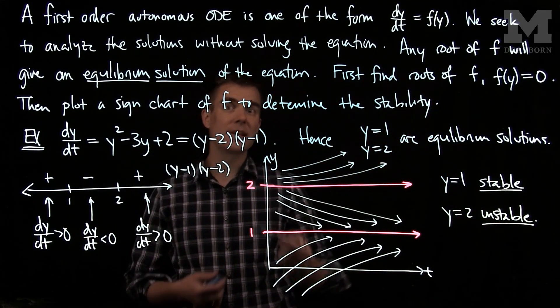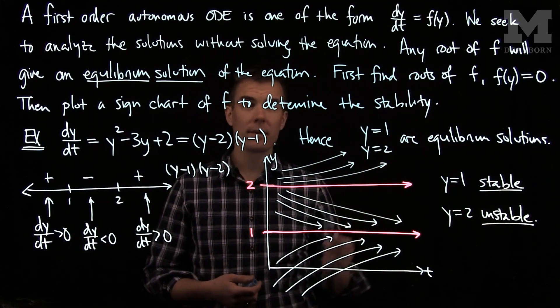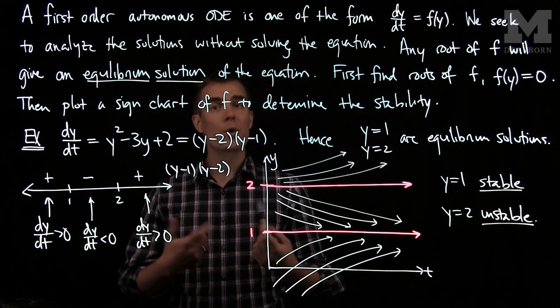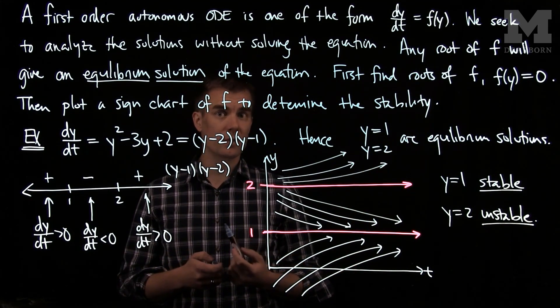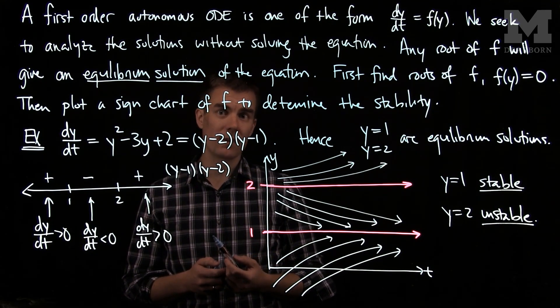So by analyzing the sign of the function f and finding the roots of f, we were able to study the stability of any solution of the autonomous ODE. Thank you very much.